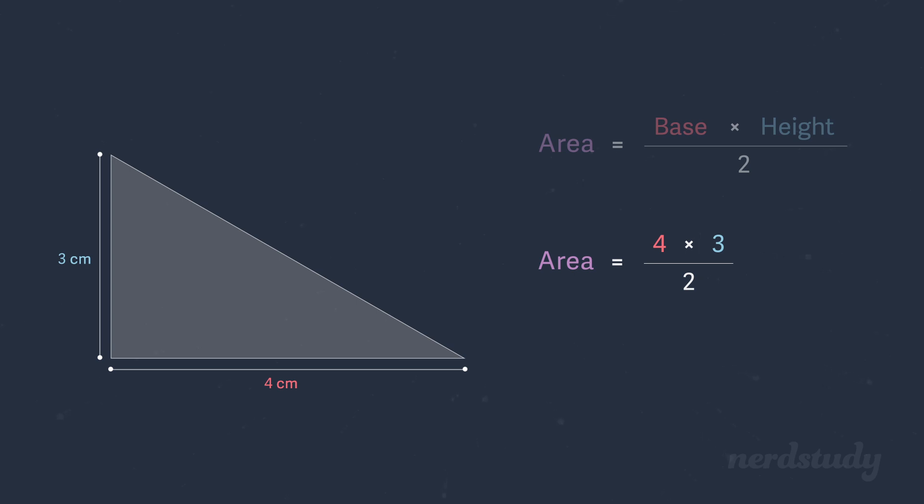Using the given formula, it would be 3 times 4 over 2, which is 12 over 2, resulting in 6 centimeters squared.